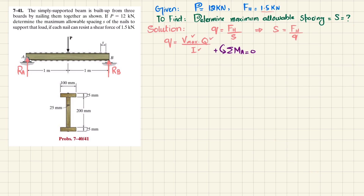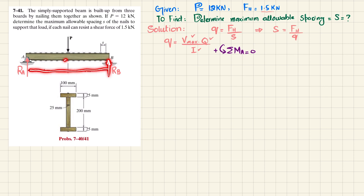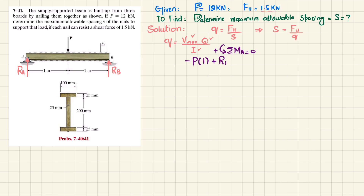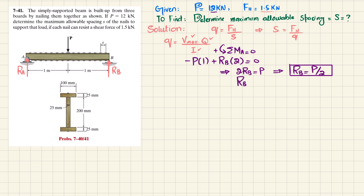The first equation of equilibrium is the sum of all moments about point A equals zero, taking counterclockwise moment as positive. The first moment is P with perpendicular distance of one meter, producing clockwise, so it is negative. The second moment is due to R_B with perpendicular distance of two meters, producing counterclockwise, so it is positive. Setting the sum to zero: negative P times one plus R_B times two equals zero, giving R_B equals P over 2.